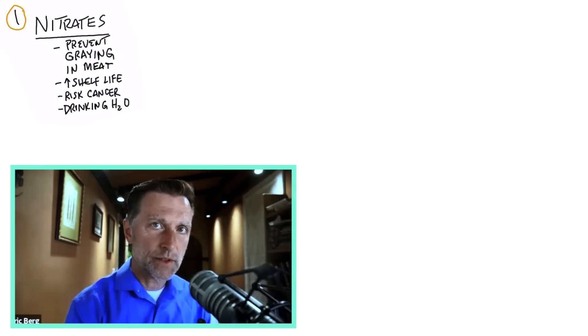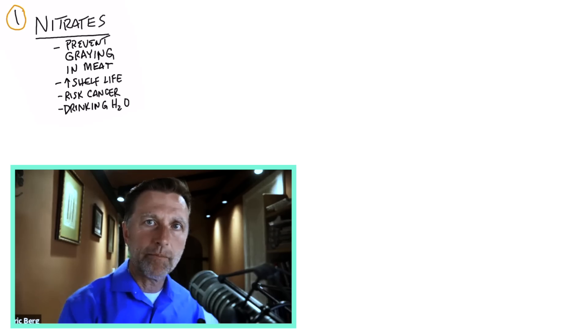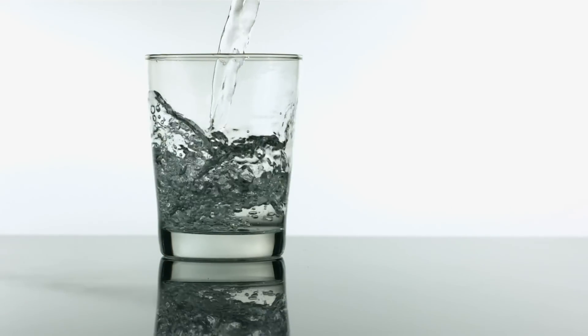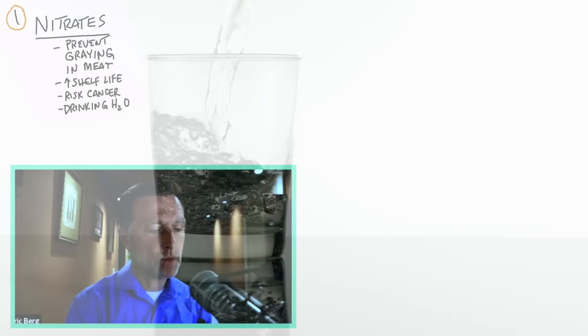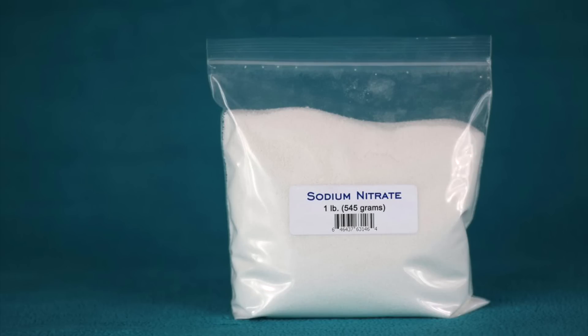The first one on the list is nitrates. Nitrates are used to preserve meat in bacon, processed meats, things like that, to keep the meat from turning gray. It keeps it red and increases shelf life, but it does increase the risk of cancer. It could also be in your drinking water. When you see on the label that nitrates are coming from celery juice, that's a completely different type. I'm talking about things like sodium nitrate.